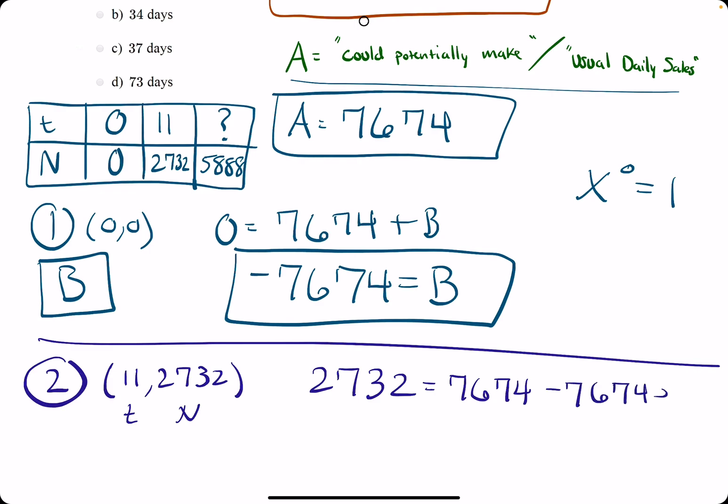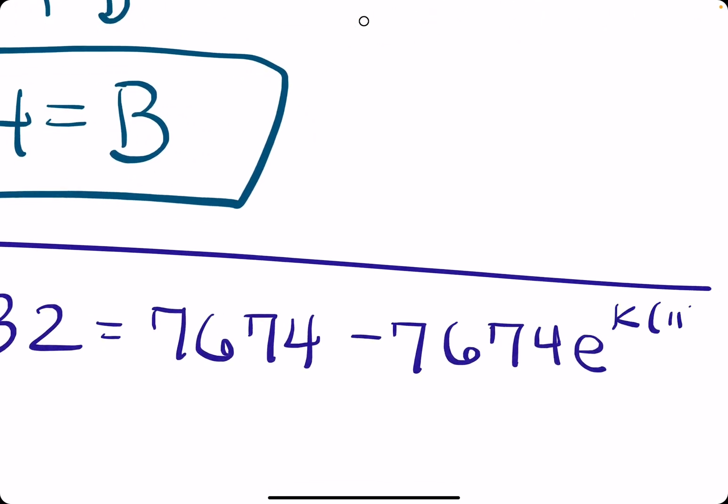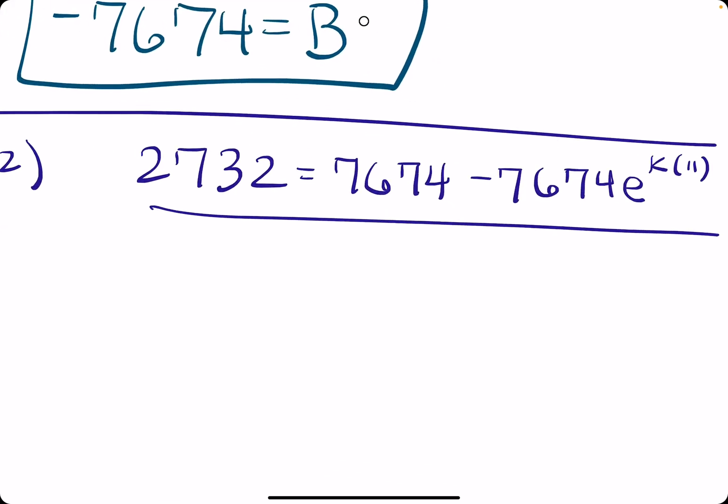Times E to the K times T—K times T, which is 11. We set this equation up, and this second part will help us solve for K. K is our only unknown here. First step is subtracting 7674.